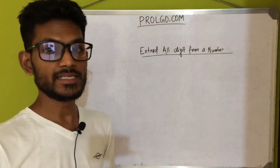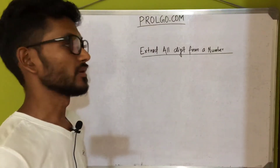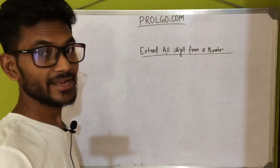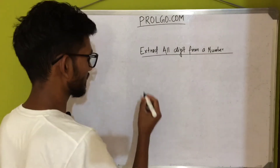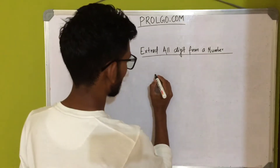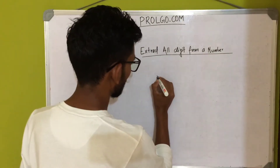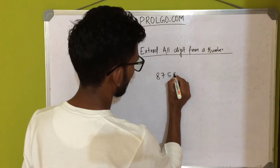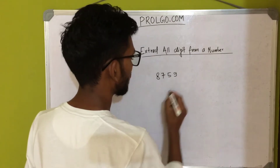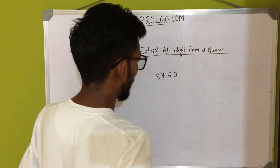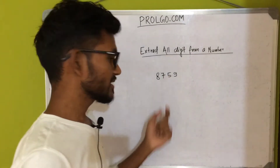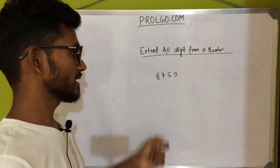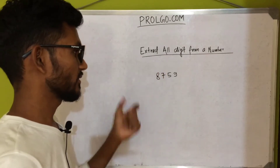How to extract all the digits from a number. Let's take one example and then I will explain. We have the number 8759, and we have to extract all the digits from this number.